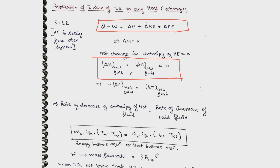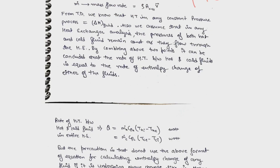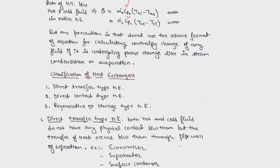This can be written as: rate of decrease in enthalpy of hot fluid = rate of increase in enthalpy of cold fluid, that is ṁ·Cph·(Thi − The) = ṁ·Cpc·(Tce − Tci). Note that Thi > The and Tce > Tci, because the cold fluid temperature is increasing and the hot fluid temperature is decreasing. We use Cp because we assume pressure remains constant in the heat exchanger.